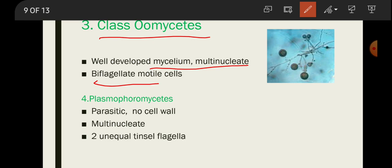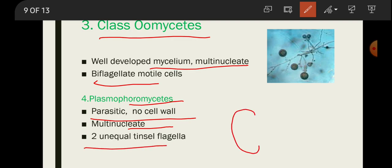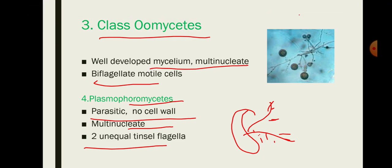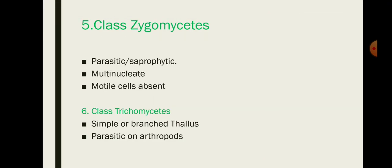The fourth subclass is Plasmodiophoromycetes. These are parasitic with no cell wall and are multinucleate. They have two unequal tinsel-type flagella — both flagella have thread-like structures on them. The next subclass is Zygomycetes.